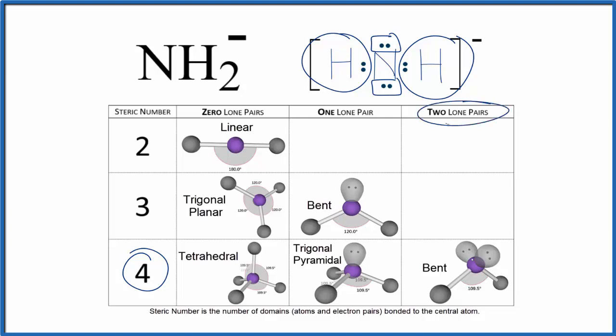Two of those things are lone pairs, so we have what's called a bent molecular geometry. We'd expect that the ideal bond angle would be 109.5 degrees, though it's probably going to be less. We'll talk about that more later. So we have this bent molecular geometry.